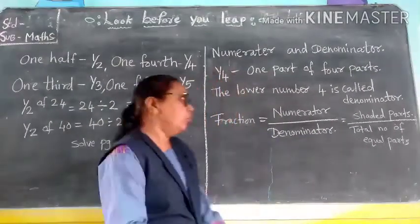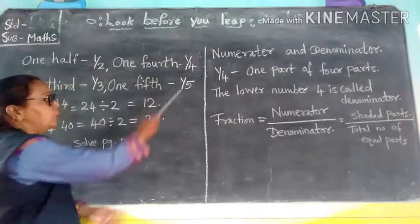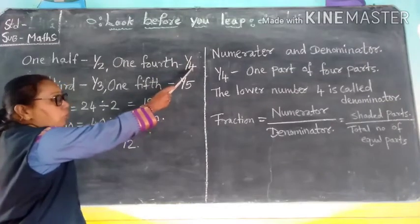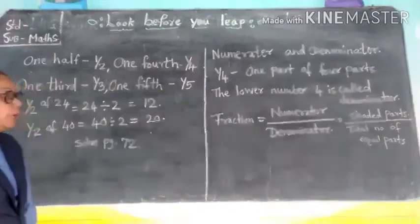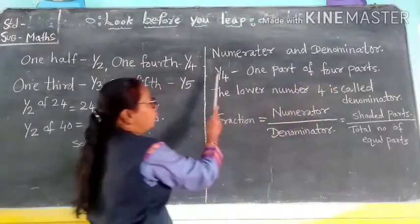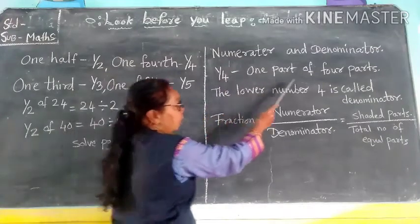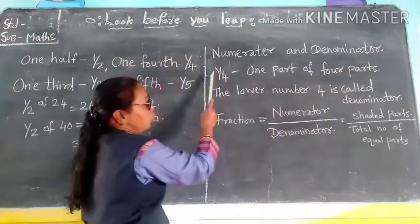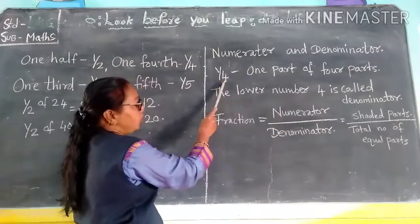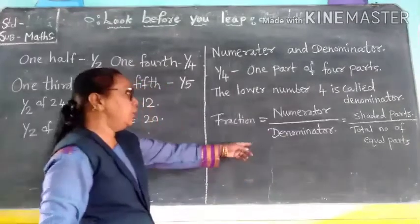Now next we are going to see what is the numerator. The upper one is called the numerator and the lower one is called the denominator. For one fourth, the numerator is 1. The shaded part is the numerator and the denominator is all the parts. Total parts is written as the denominator.